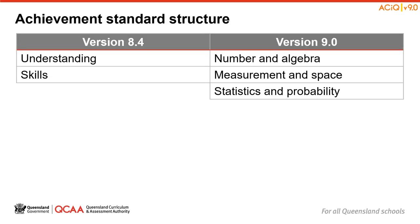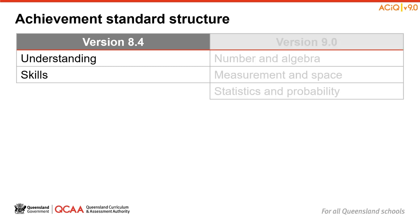Let's now move on to the Achievement Standard, which is used by schools to gather evidence against the relevant Achievement Standard across the teaching and learning cycle. The organisation of the Achievement Standard in Version 9 for mathematics has changed. On screen, you can see Version 8.4 on the left and Version 9 on the right. In Version 8.4, the Achievement Standard was presented in a two-paragraph structure — the first paragraph outlining the knowledge and understanding, and the second paragraph the skills.